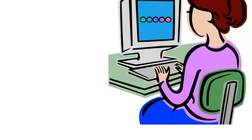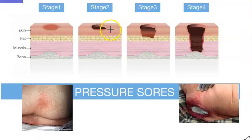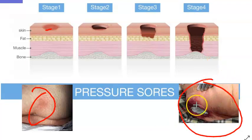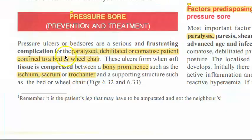The sore just keeps going on and becoming necrosed. Look at the stages of pressure sore — initially there is just redness, and then it progresses to stage 4, where it is very deep. This is a serious and frustrating complication seen in paralyzed, debilitated, and comatose patients who are confined to bed or wheelchair.